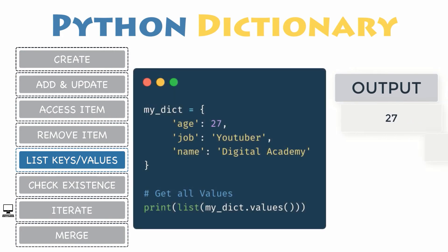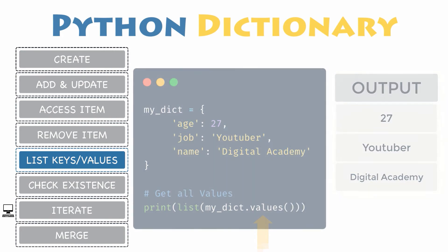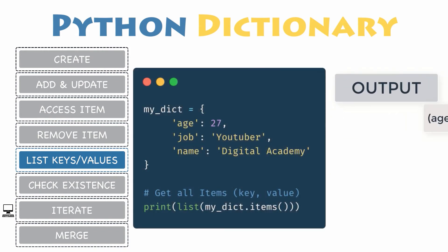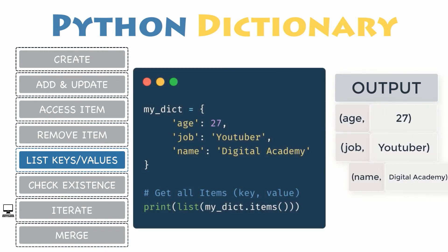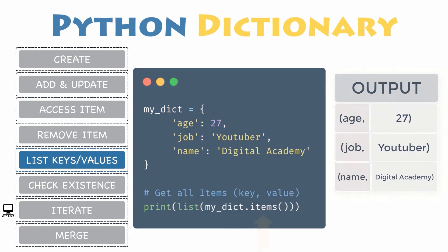Values. This method returns only a list of all the values inside the dictionary. Eventually, you may need to get both at the same time. Fortunately, the items function provides this ability and will return a list of tuples, in which each item is composed of the key and its associated value.